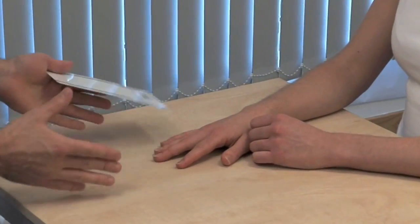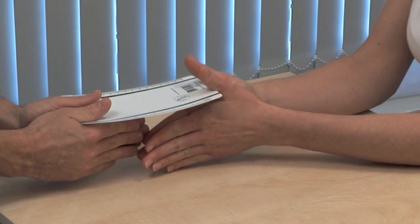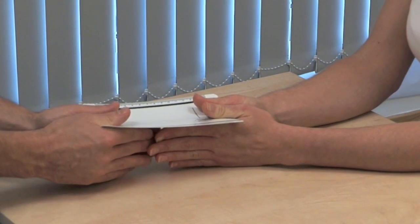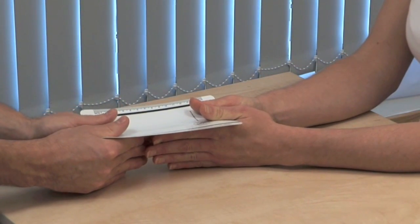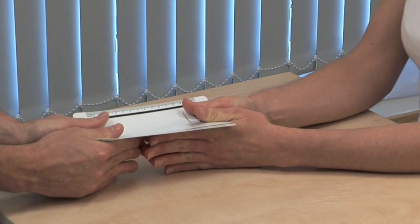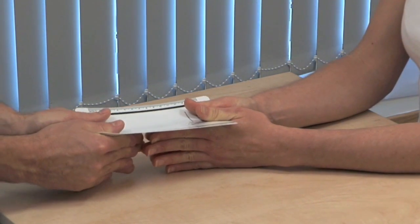I want you to grip the card, like me, with the sides of your thumbs and your index fingers. And don't let me pull it away. If adductor pollicis is weak, the patient will flex the thumb in order to grip the card.